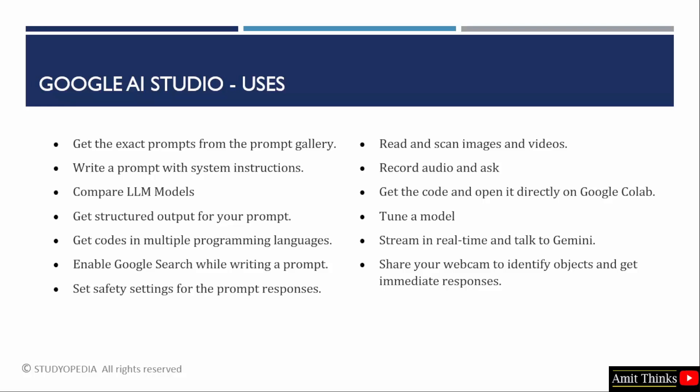If you want to generate code, you can easily generate it in multiple programming languages. If you want real-time updates, you can enable the Google Search option so that the output is in real-time. If you want to disable harmful content, a safety settings option is available. With the safety settings, you can adjust how likely the responses could be harmful. Content is blocked based on the probability that it is harmful — options like block low, medium, and high probability of being harmful can be set for harassment, hate, dangerous content, and other harmful responses.